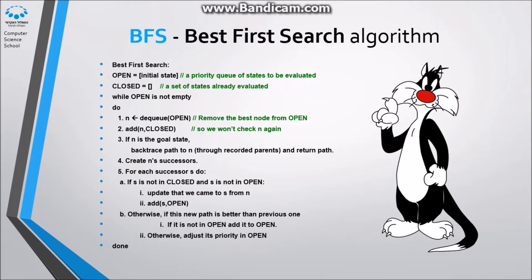The BFS gets a start position and the goal position and searches the shortest path between both. It works with a priority queue of states. For each state we arrive at, we mark it as already visited and check if this is the goal position. If this state is the final one, we trace back to the start position to show the solution.